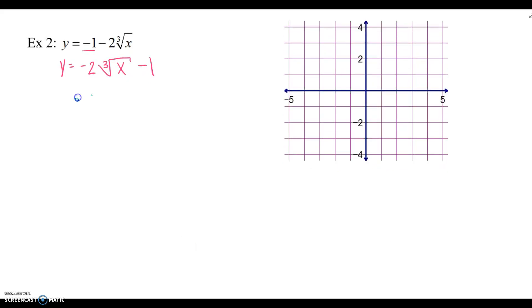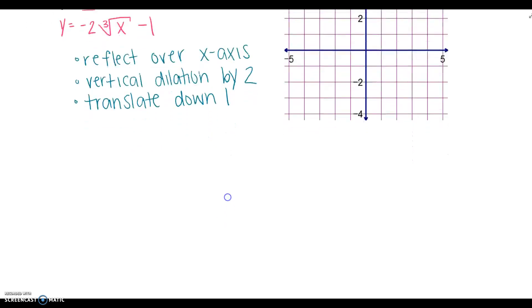So let's list those transformations. We have that negative, which is a reflection. So reflect over the x-axis. The 2 is on the outside. So that's going to be a vertical dilation by 2. And then nothing is with the x. But we have something outside. So that's going to be translate. And because it's on the outside, we're going down 1.